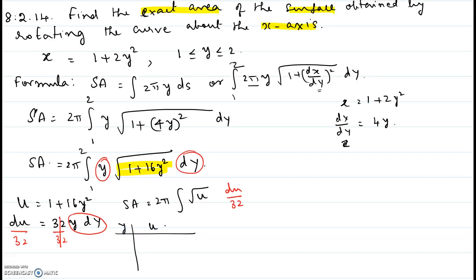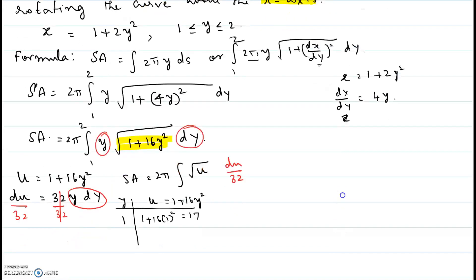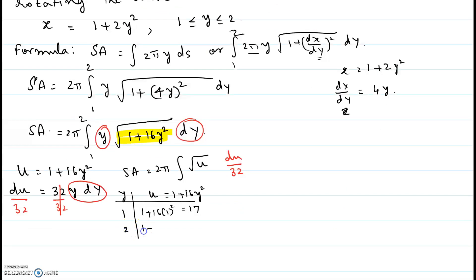The y limits are given, and we are going to change it to the variable u. Our substitution is 1 plus 16y squared. The lower limit for y is 1, so if you plug that in, 1 plus 16 times 1 squared, which is 17. Then the upper limit is 2, so 1 plus 16 times 2 squared, which is 65. So here I'm going to use the new limits for u, which are 17 and 65.